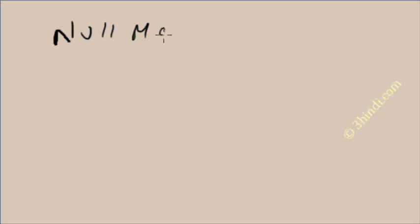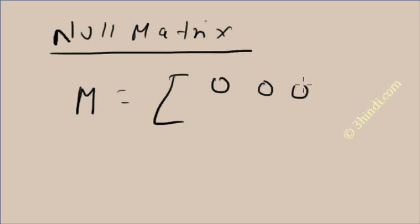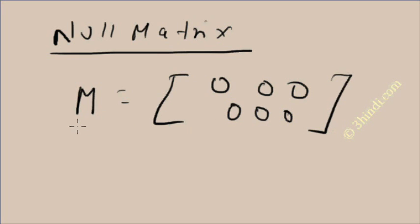One important type of matrix is called NULL MATRIX. What type of matrix is called NULL MATRIX? Here is the example. Suppose any matrix M is equal to [0 0 0 / 0 0 0]. So M is a NULL MATRIX.